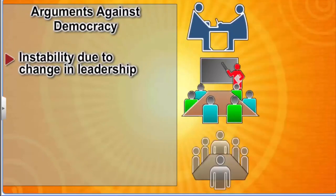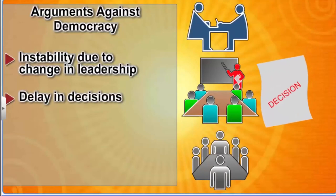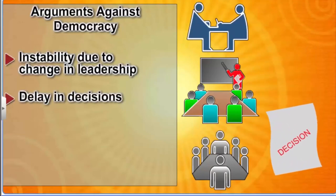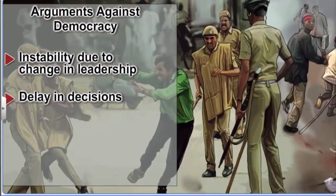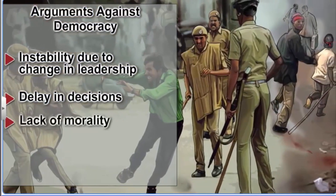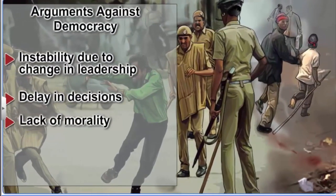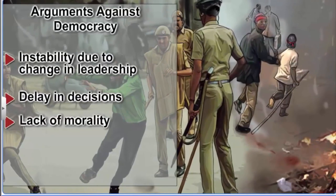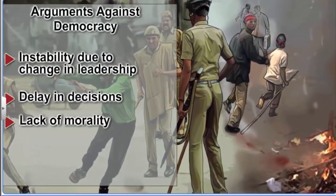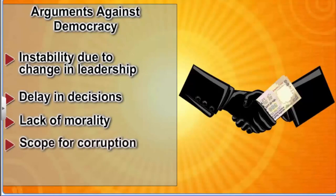Quick action is not possible in democracy because many people need to be consulted before making any kind of decision. Politicians are not too concerned about morality in a democracy, because this form of government is all about political competition and power play. In fact, electoral competition provides a lot of scope for corruption.